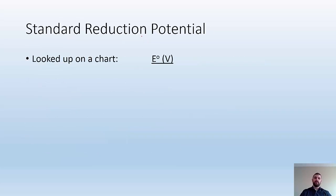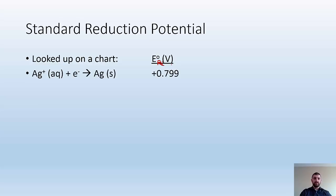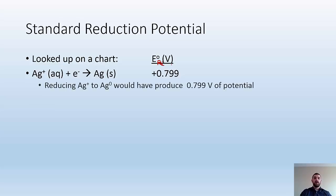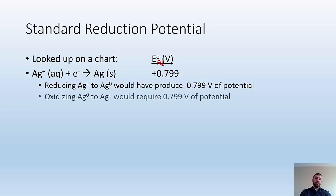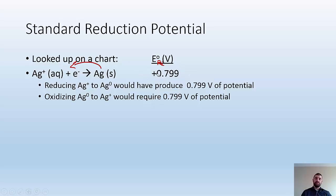You're going to look up a chart. It's going to have this E-naught notation and a V for volts — it might even say 'red' for reduction. So here are some examples: silver's reduction potential is positive 0.799 volts, meaning reducing Ag⁺ to Ag⁰ would produce 0.799 volts of potential. So oxidizing — going in the opposite direction — we negate that, so it would require 0.799 volts of potential to go from Ag⁰ to Ag⁺.